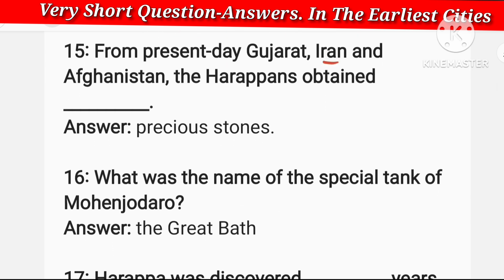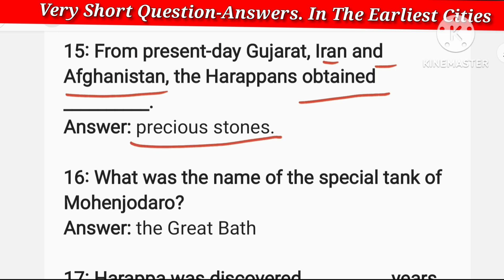From present-day Gujarat, Iran, and Afghanistan, the Harappans obtained precious stones — meaning diamonds and gems.